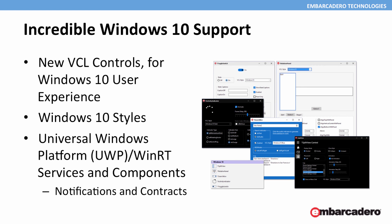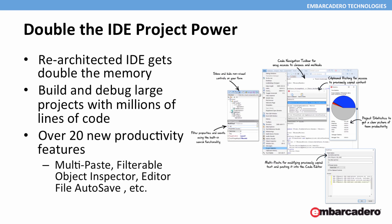We are introducing incredible Windows 10 support that goes from WinRT direct access for existing VCL applications to new VCL controls, which we haven't introduced for a few years. We are doubling the amount of memory available to the IDE, making it possible to compile very large applications — some customers report up to 37 million lines of code within their applications. Beyond that, we're adding a lot of new productivity features, from enhancements in the editing experience to new things in the Object Inspector and other classic areas of the product.